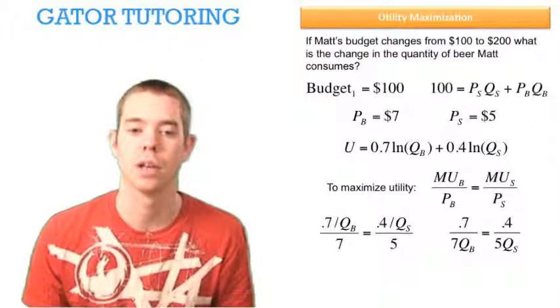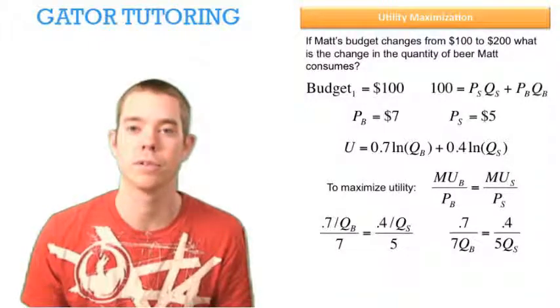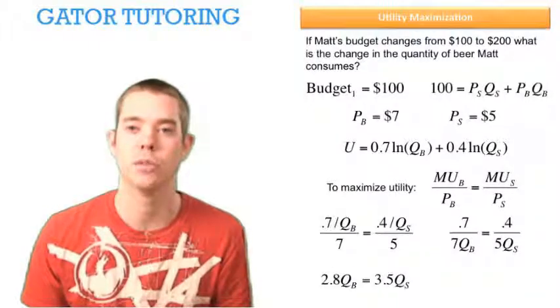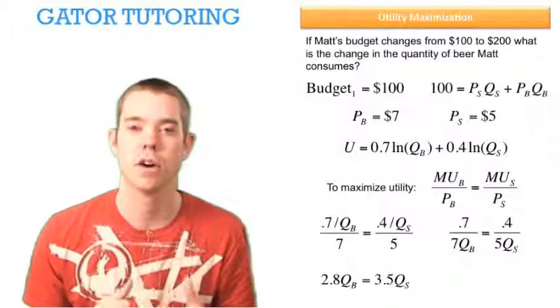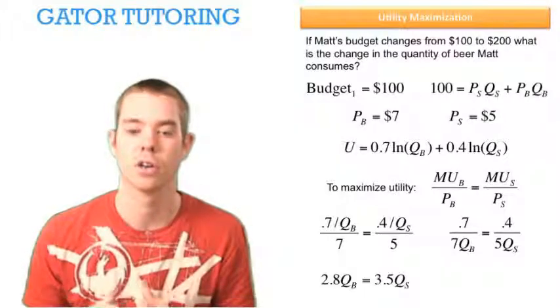Now we can cross multiply. 7 QB times 0.4 gives us 2.8 QB. 0.7 times 5 QS gives us 3.5 QS. And now we need to solve for one variable in terms of the other variable.